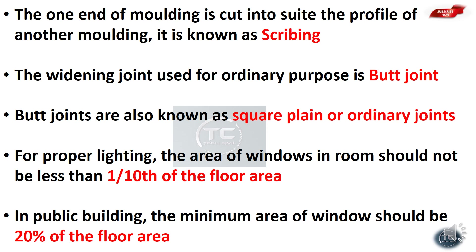For proper lighting, the area of windows in a room should not be less than one-tenth of the floor area. In a public building, the minimum area of window should be 20% of the floor area.